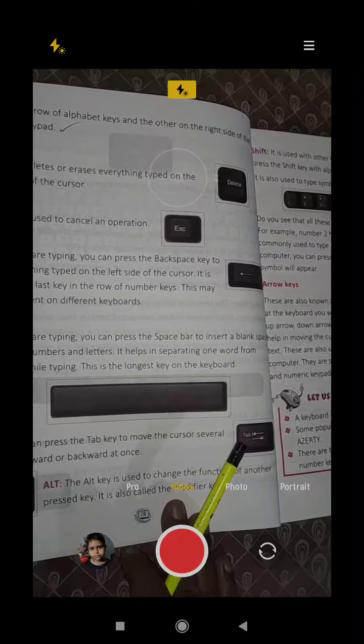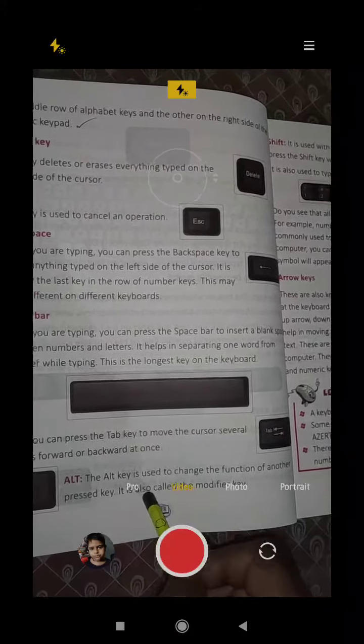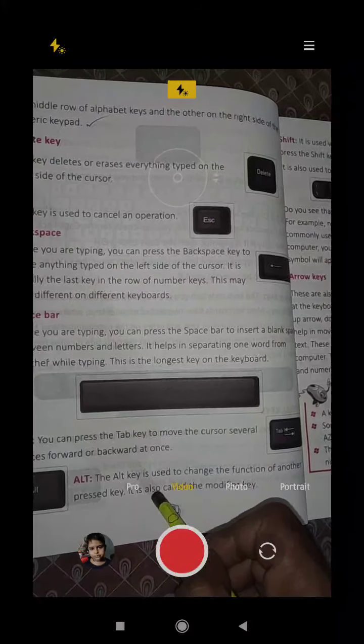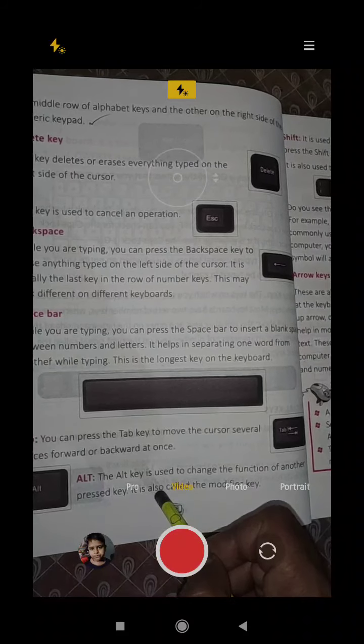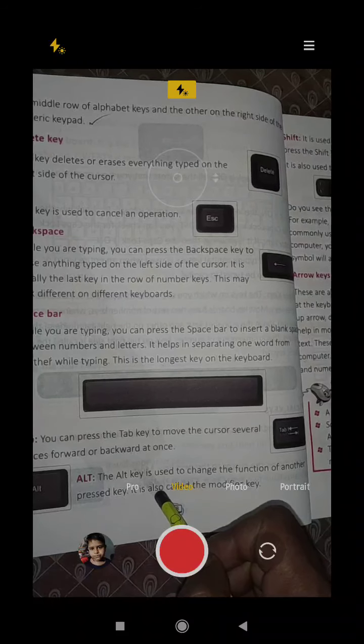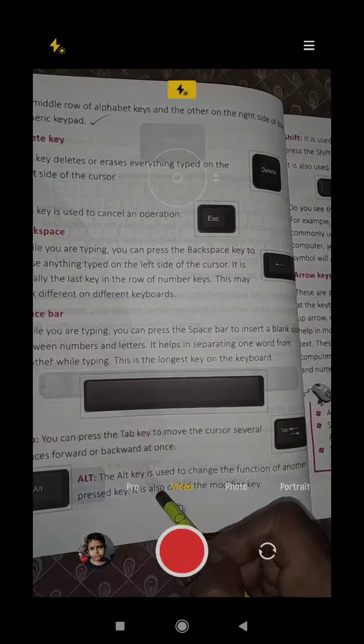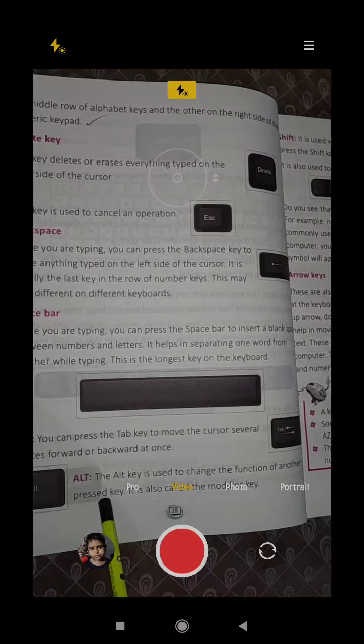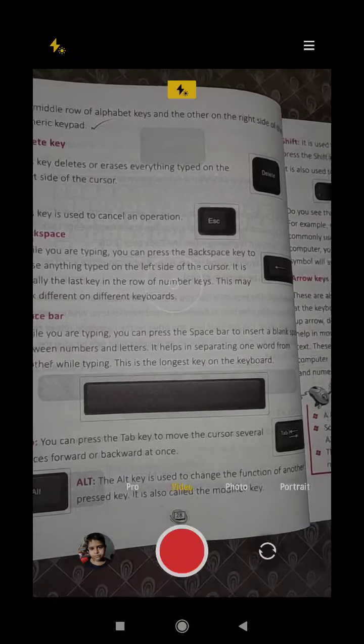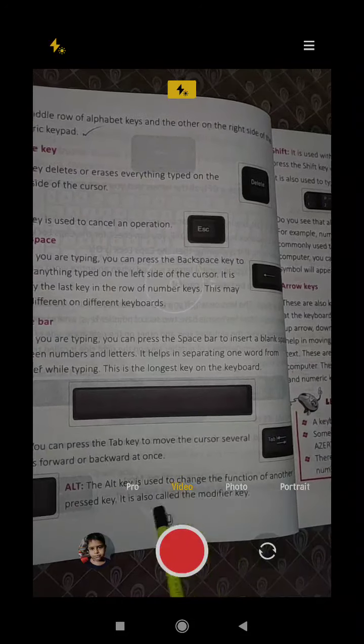Alt means we will select something when we use the menus in the tabs. The alt key is used to change the function of another pressed key. It is also called the modifier key.